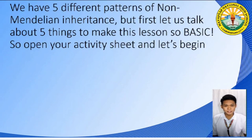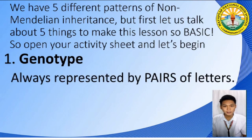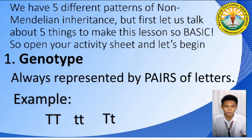We have 5 different patterns of non-Mendelian inheritance. But before that, let us jot down the basics of this topic. The first thing that you need to know is all about genotype. Genotypes are represented by pairs of letters. They can be both capital letters, they can be both small letters, or they can be a combination of a capital and a small letter, as shown on your screen.